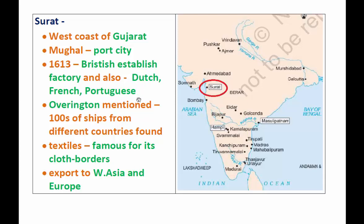Not only the British, but also the Dutch, French, and Portuguese established factories in Surat. As you can see from the map, a writer named Overington mentioned in his books that hundreds of ships from different countries were found in Surat.